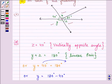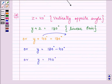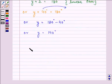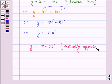Now we can see that angle y is vertically opposite to this angle, which is the sum of x and 25. So angle y is equal to x plus 25 degrees, being vertically opposite angles.